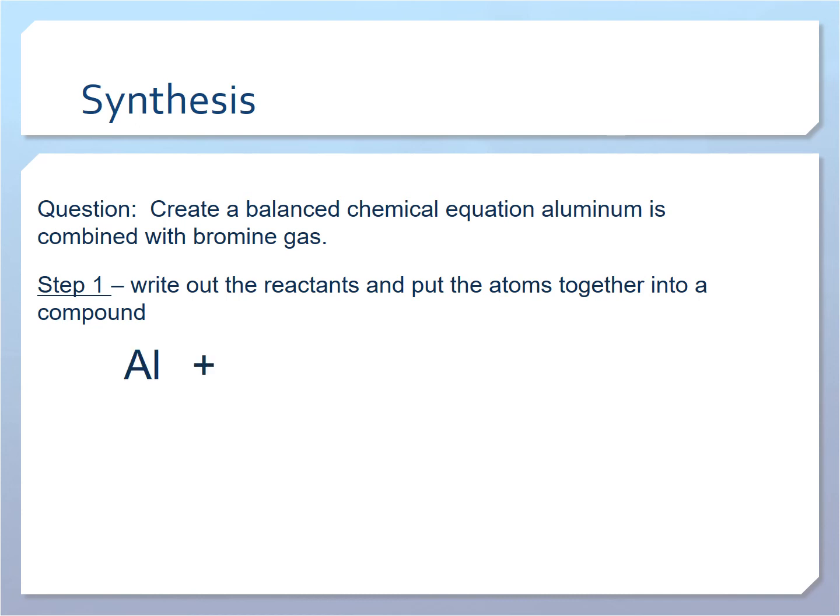So we'll write aluminum by itself, and we'll put bromine as a gas. It's a diatomic gas. And so the two elements it's going to make are going to be aluminum and bromine combining, and this may or may not be the correct formula.